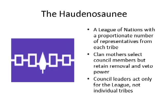The Haudenosaunee had a very elaborate form of government prior to European contact. Some say they represented the very first democratic system in North America, maybe even in history, because the League of Nations operated on a council system. Each tribe sent members to one large council that would make decisions for the entire Confederacy. The number of representatives from each tribe was based on the size of the tribe — proportional, similar to our Congress and how we choose our House of Representatives.